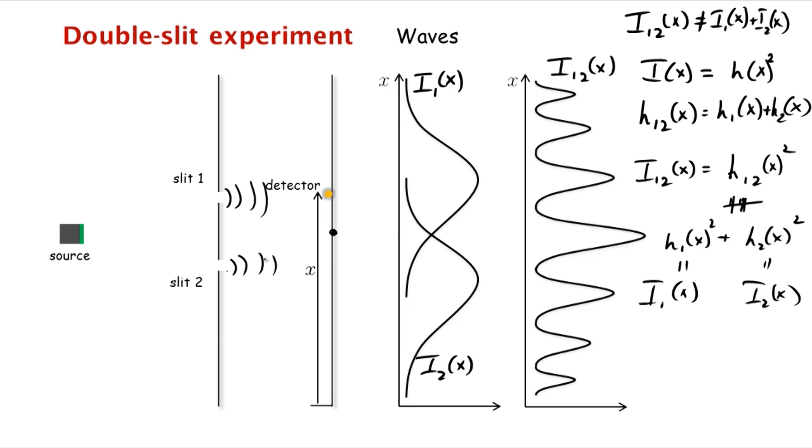And similarly, when a trough arrives from the first slit, the corresponding trough arrives from the second slit. And so you get a particularly big trough. And so the water oscillates particularly violently in the middle. This means that the wave at this point has a lot of energy.